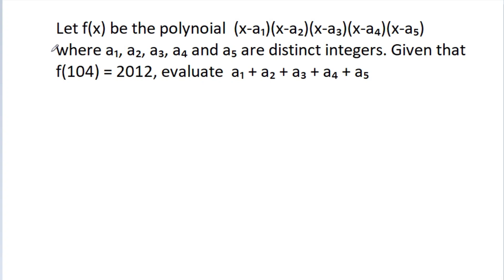In this video, we have given that f(x) is a polynomial: (x-a1)(x-a2)(x-a3)(x-a4)(x-a5), where a1, a2, a3, a4, and a5 are distinct integers. Given that f(104) is equal to 2012, then we have to find the value of a1 plus a2 plus a3 plus a4 plus a5.